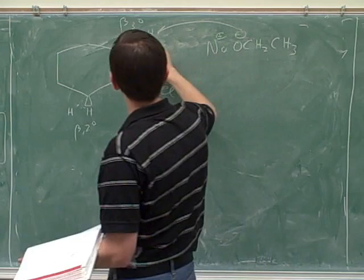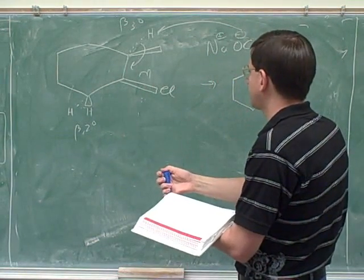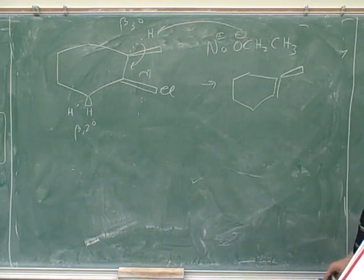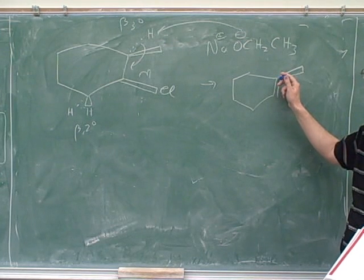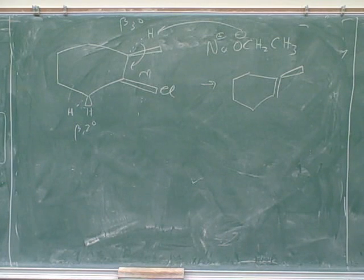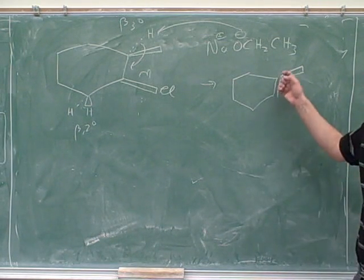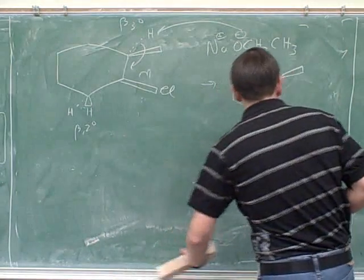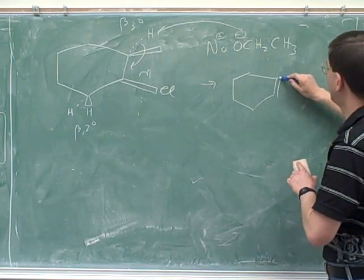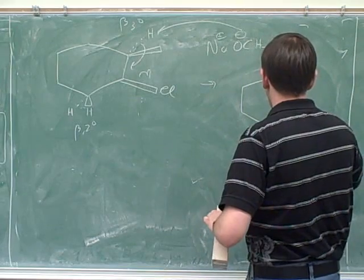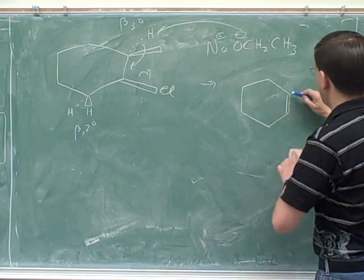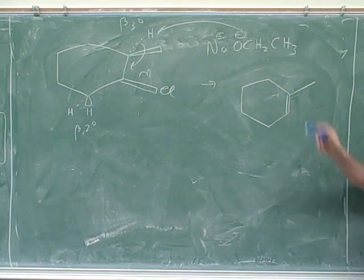So you simply drew the mechanism. Now, there's one problem with the way you drew your product. What is the geometry at this carbon going to be - linear, trigonal planar, or tetrahedral? It's going to be trigonal planar, because it's an alkene - a double bond. Double bonds are pretty much always trigonal planar. But that means it doesn't really make sense to use wedges and dashes anymore - that's for tetrahedral. If we've drawn these two bonds in the plane of the page, you should not use wedge-dash notation here.